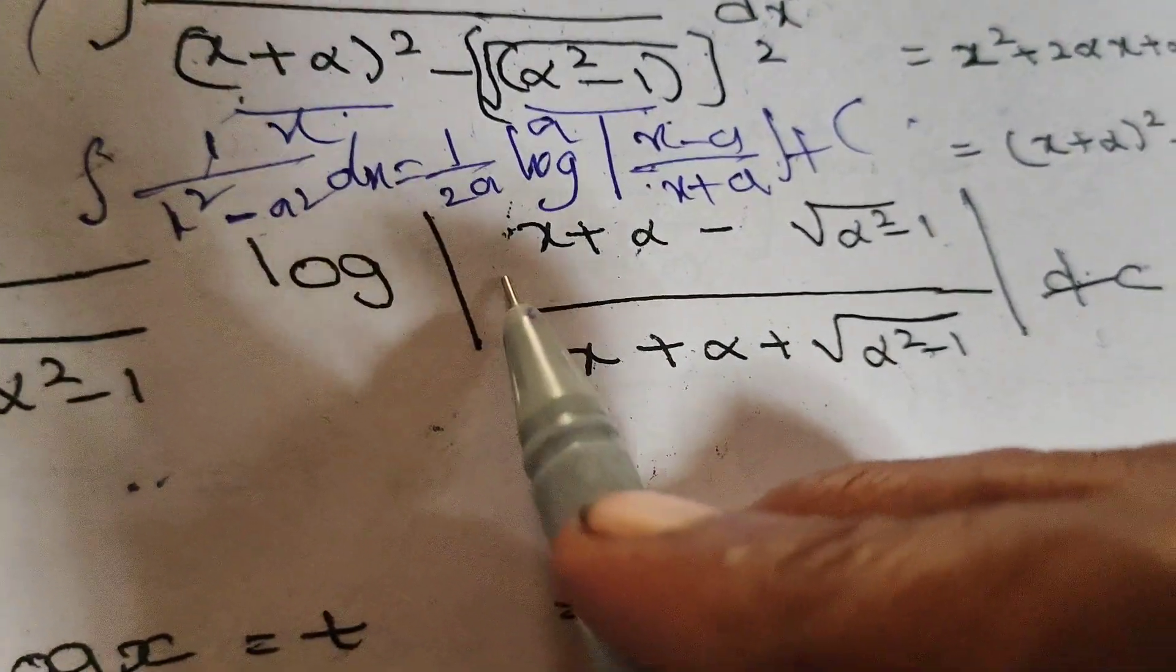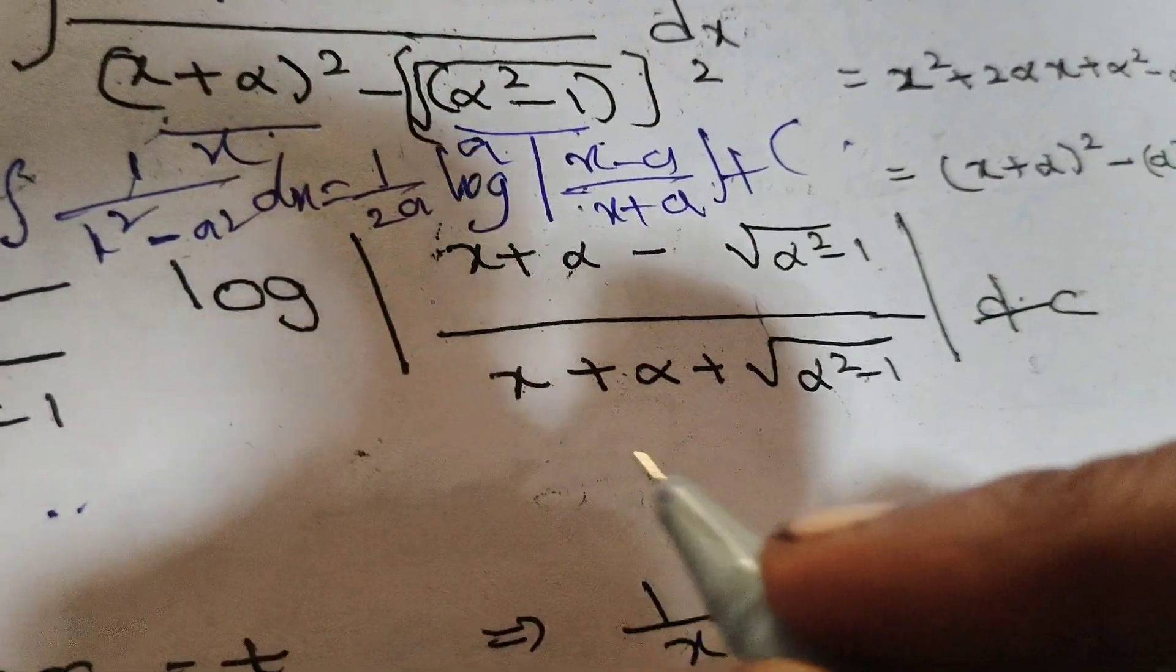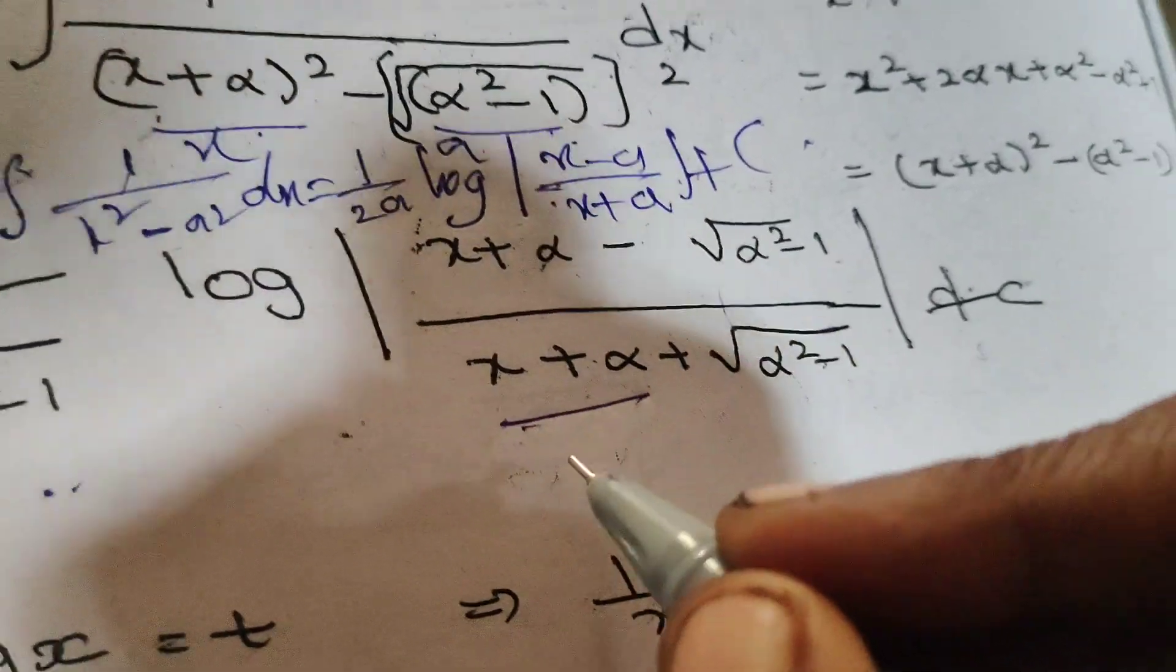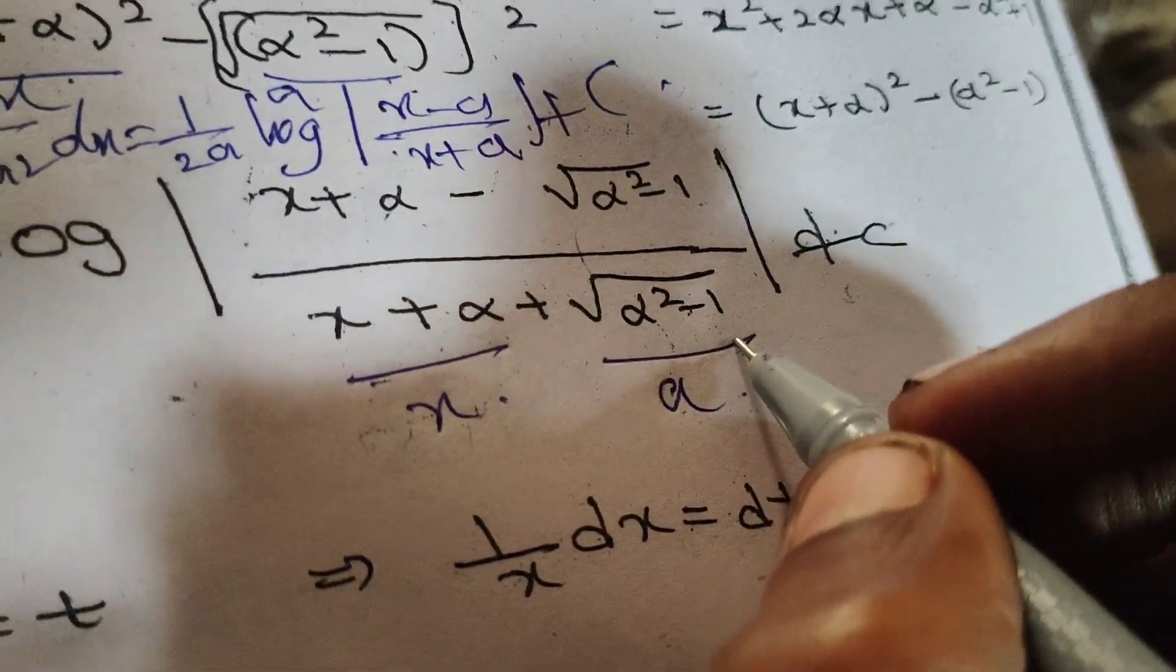Again, x means x plus alpha minus... y means root of alpha square minus 1 by x plus y. x means x plus alpha, a means root of alpha square minus 1.